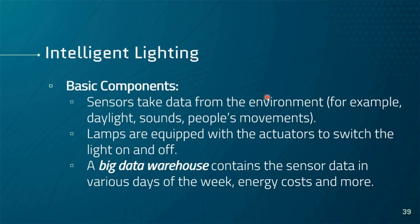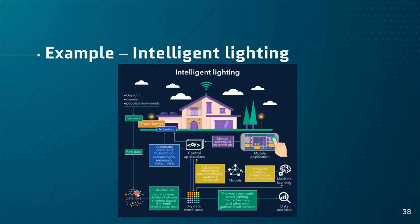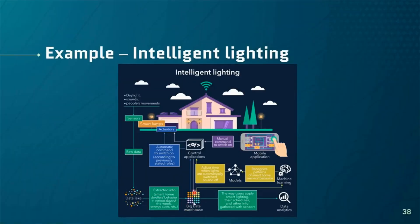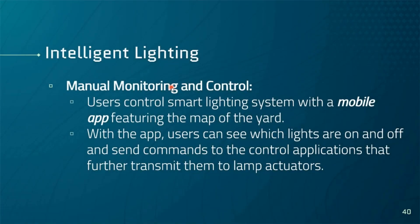Sensors take data from the environment — for example, daylight, sounds, and people's movement. Lamps are also equipped with actuators to switch lights on and off. These are the things. Big data warehouses contain sensor data from various days of the week, energy costs, and more. Sensors gather raw data — people's movement, sounds, energy, temperature, noise — and send it to a data lake, which feeds into the big data warehouse.